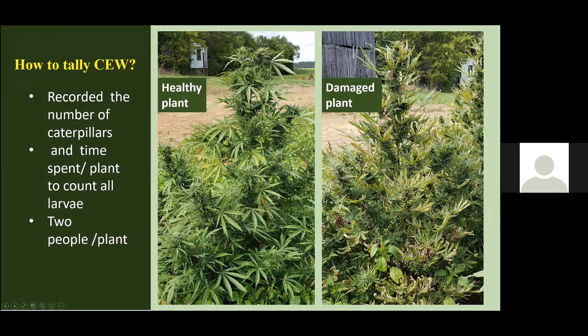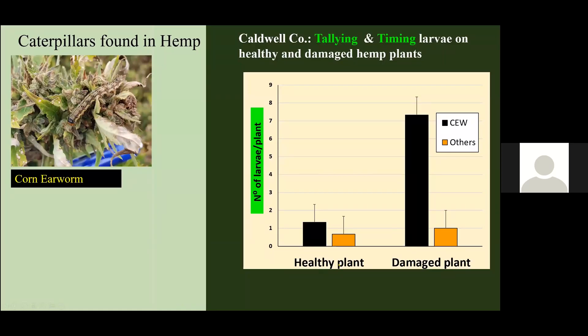On the healthy plants, you cannot see damage caused by the corn earworm. On the damaged plant, you can see some frass and some dry leaves. We tried to evaluate the numbers. This was done in Princeton in a field that we have with a producer. On the healthy plants, we only found very few caterpillars. When you go to the field, you can see that they are present there.